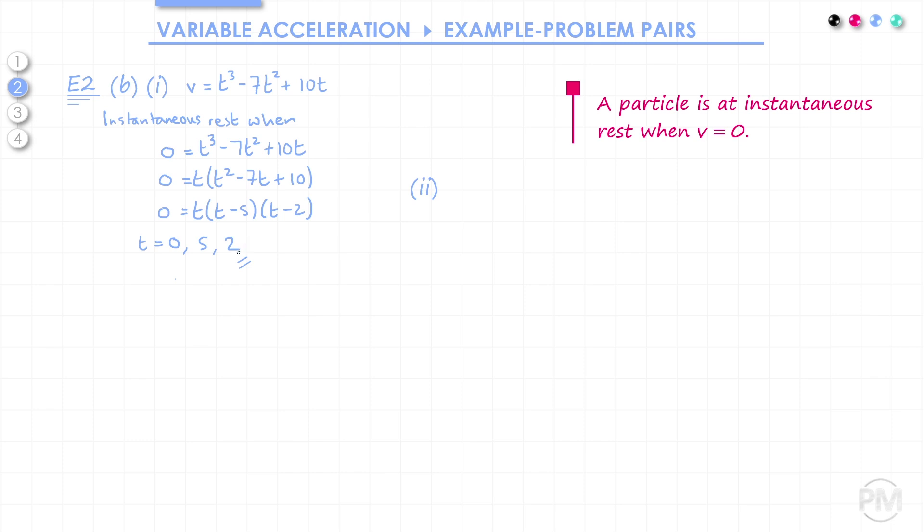In the next part, we need to sketch the velocity time graph. So we'll start with a pair of axes. From the calculations we did in part 1, we know that there are roots at 0, 5 and 2. We also know we've got a cubic graph, which has a positive leading coefficient. That means the shape of it will be something like this. So filling in that information, we've got a positive cubic starting at the origin, and it goes through 2 and 5.